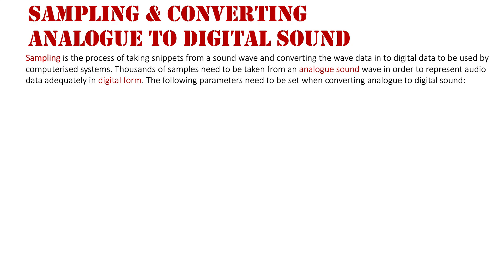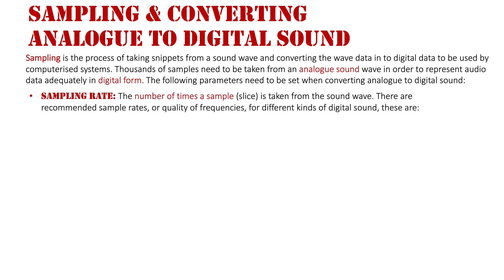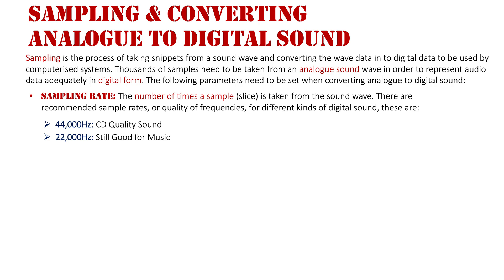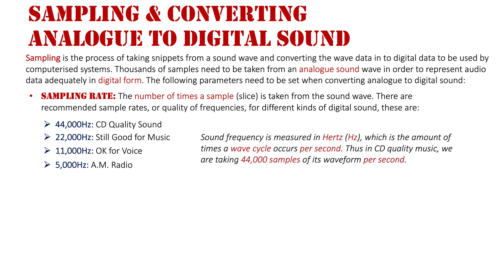The following parameters need to be set when converting analog to digital sound. Firstly is the sampling rate — the number of times a sample or slice is taken from the sound wave. There are recommended sample rates or quality frequencies for different kinds of digital sounds: 44,000 Hz for CD quality sound, 22,000 Hz for good quality music, 11,000 Hz for voice, and 5,000 Hz for that husky AM radio sound.